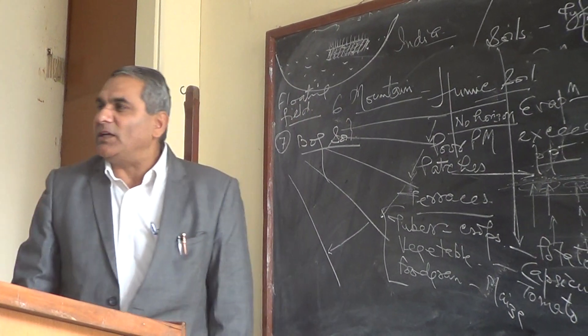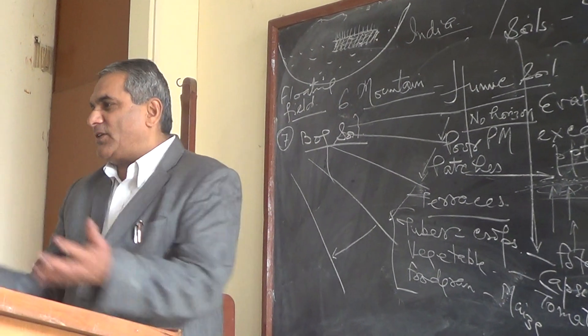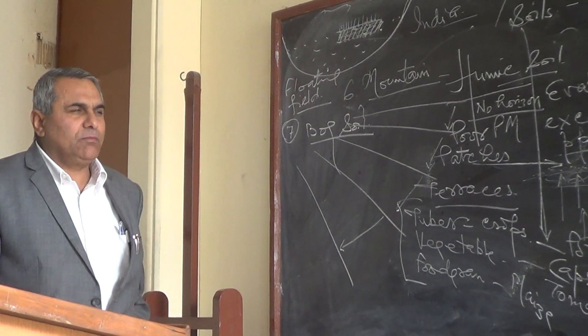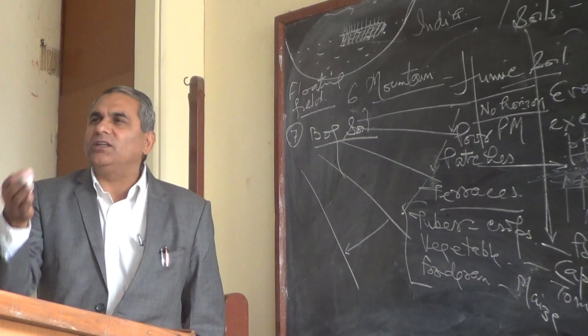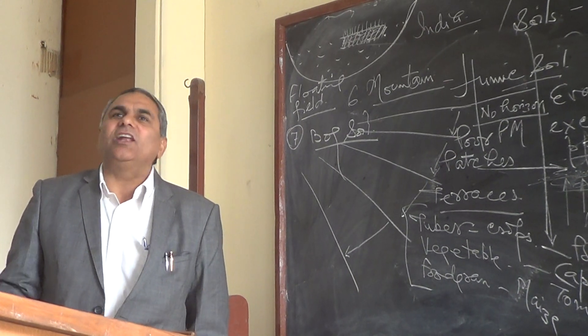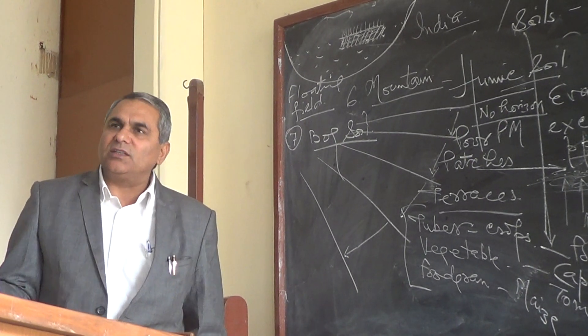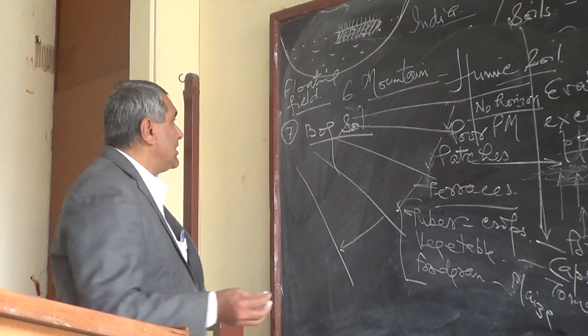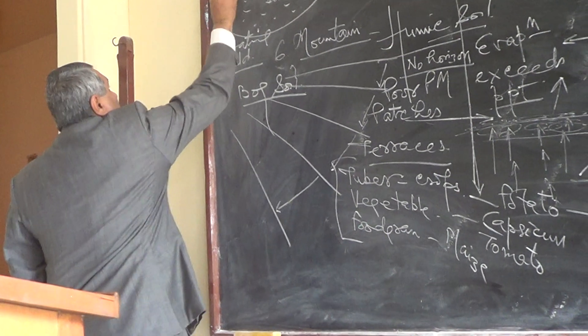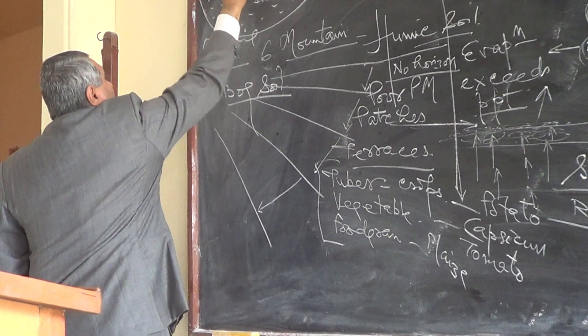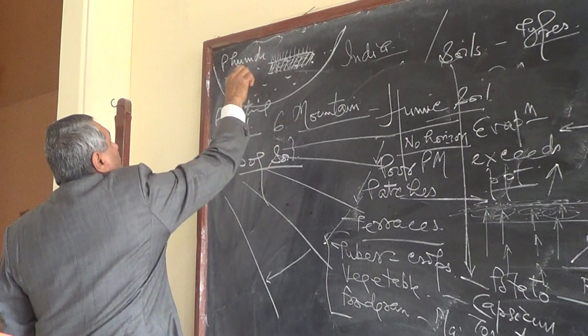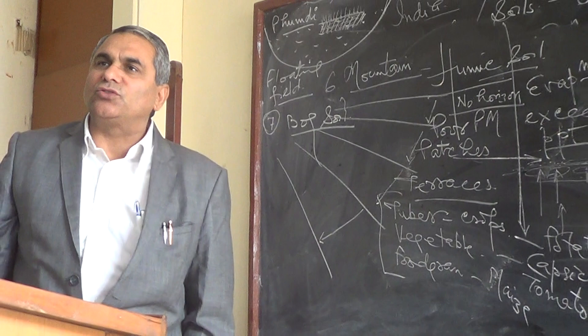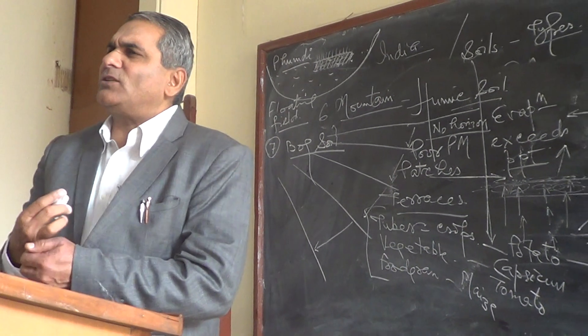Sometimes fields are floating - it's a phumdi in Manipur. Loktuk is the lifeline of Manipur, and farmers perform agriculture on phumdis. Phumdi is a local terminology (P-H-U-M-D-I). These floating fields are the outcome of bog soil.